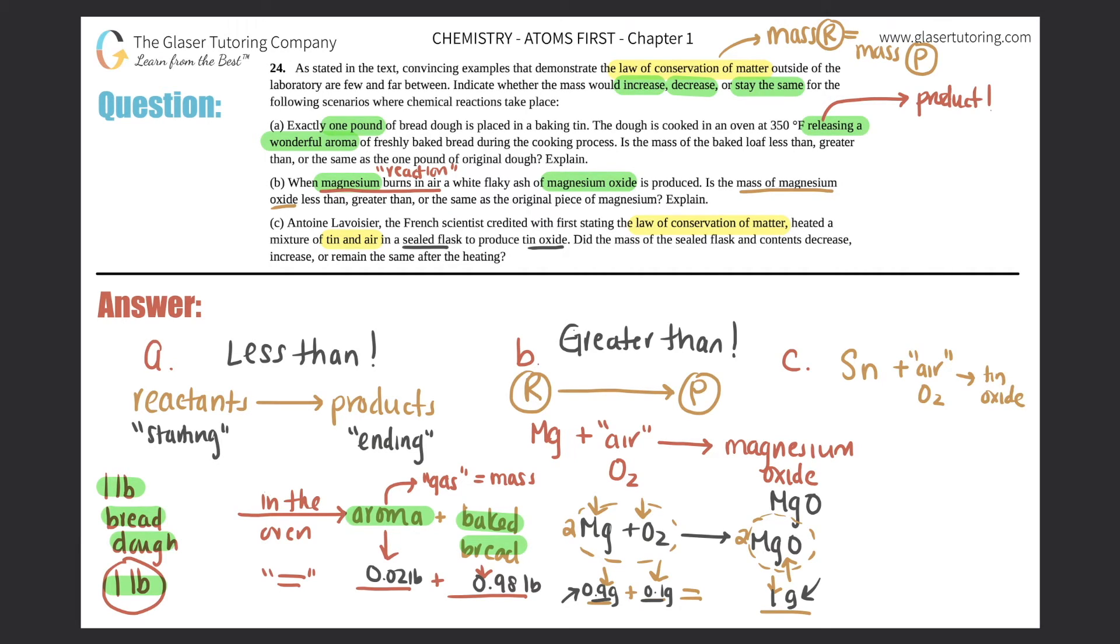Did the mass of the sealed flask and contents decrease, increase, or remain the same? Now the key here is that it was sealed. If you have a flask and you add tin, I'm going to put tin as the yellows and I'm going to put air as the blues. Here's Sn, Sn, Sn, O2 for air. And you seal this up, which means that literally nothing can escape. You're putting a seal on it. So nothing can escape.